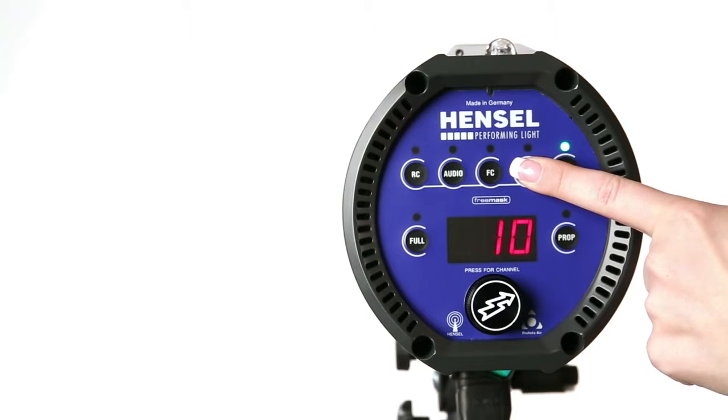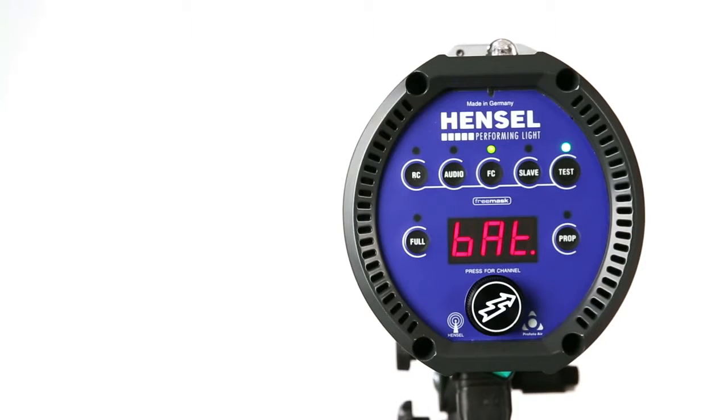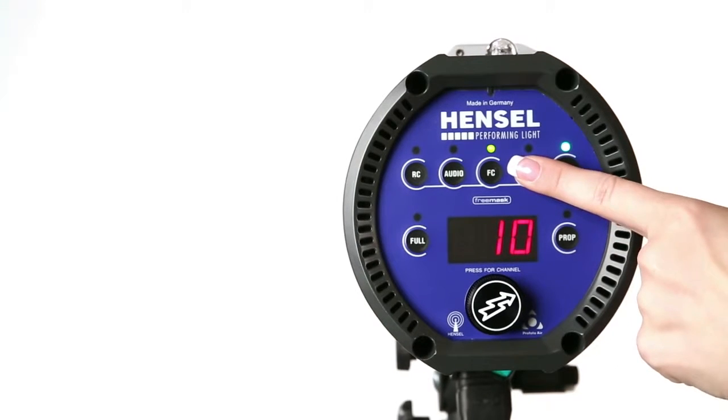When connecting the Expert D to a PowerMax L battery power supply, the unit must be set to a special mode using the slave button. The modeling light is set to 100 Watt and the flash check function is activated.